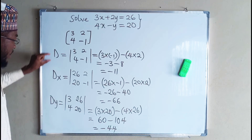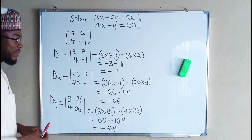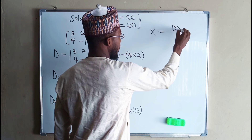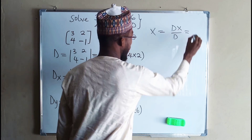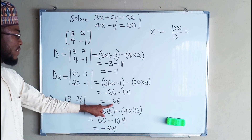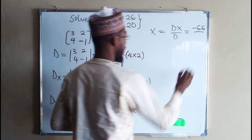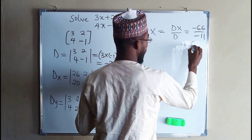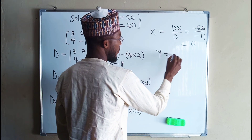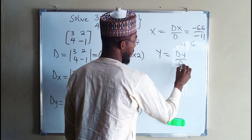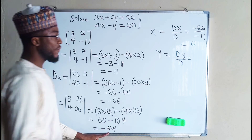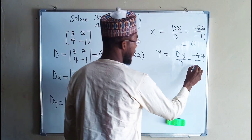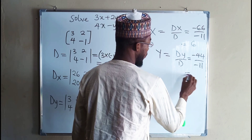So we have found the determinant, the determinant with respect to x, and the determinant with respect to y. The value of x equals Dx divided by D, which is negative 66 divided by negative 11, and this equals 6. To find y, divide Dy over D: negative 44 divided by negative 11, which gives us 4.